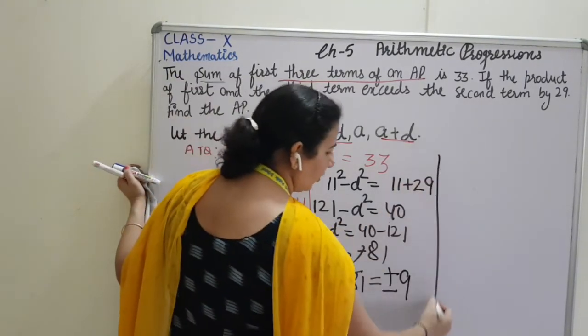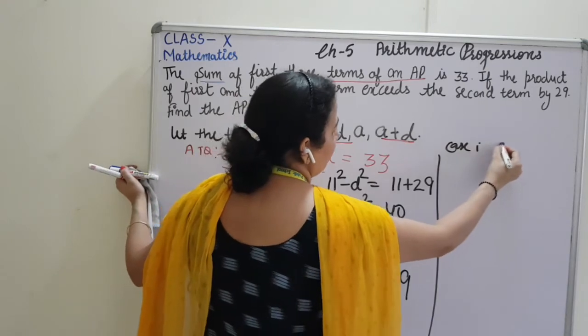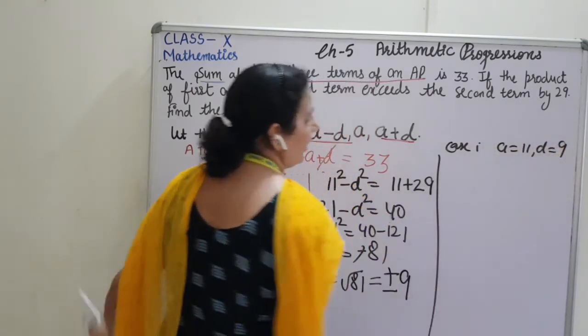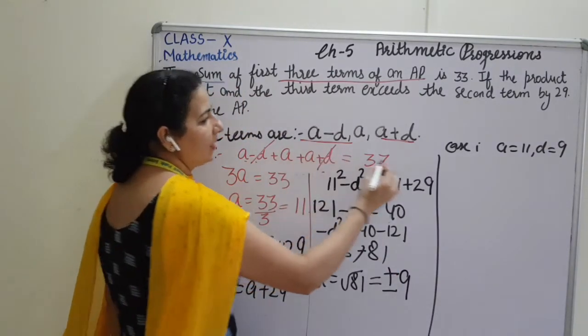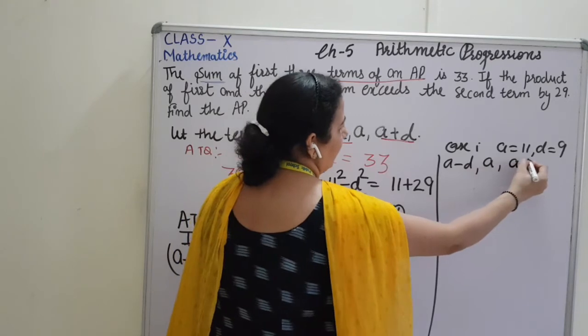So, we will make two cases. Case 1: A is equals to 11 and D is equals to 9. So, the terms are A minus D, A and A plus D. A is 11 minus 9, 11, 11 plus 9.